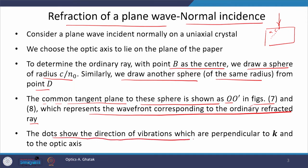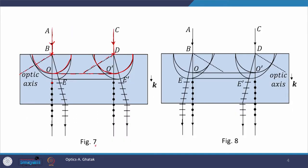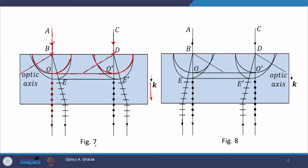The dots in figure 7 show the direction of vibration, which are perpendicular to k and to the optic axis. These dots indicate the polarization direction or the direction of vibration going into the plane of the paper. The oscillations are perpendicular to the optic axis as well as the wave vector k, which is in the forward direction. So for the O ray, the vibration direction is perpendicular to vector k as well as perpendicular to the optic axis.